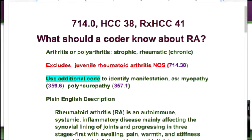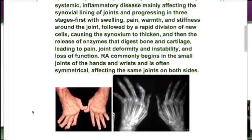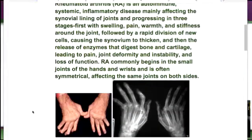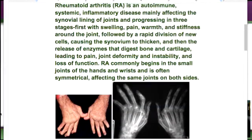RA can really wreak havoc on your extremities — your hands, feet, and knees. It gets into the cartilage. Pain is the main thing; a lot of pain. That's one of the treatments — they're treating the pain. You also get joint deformity and instability, to where you can't function.